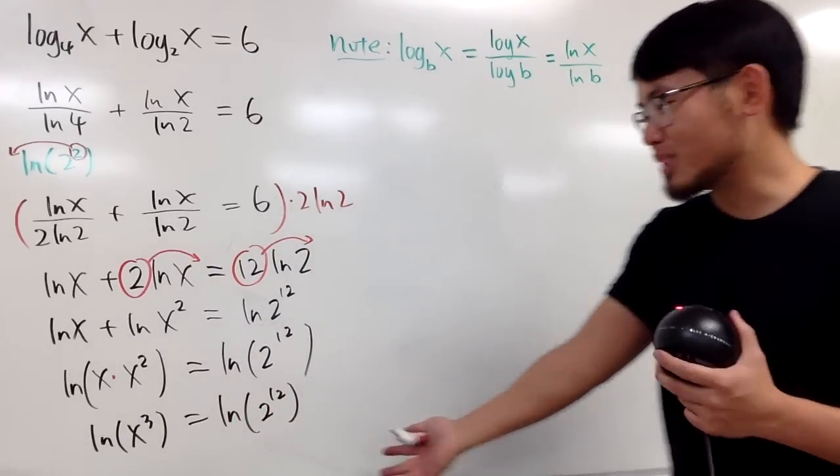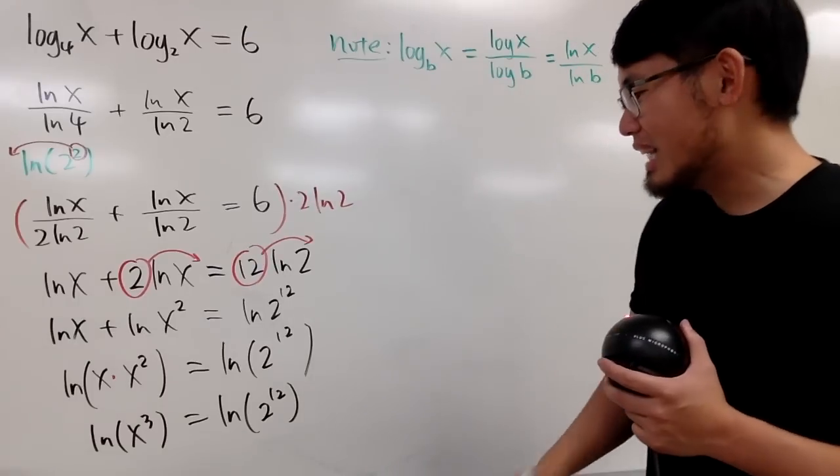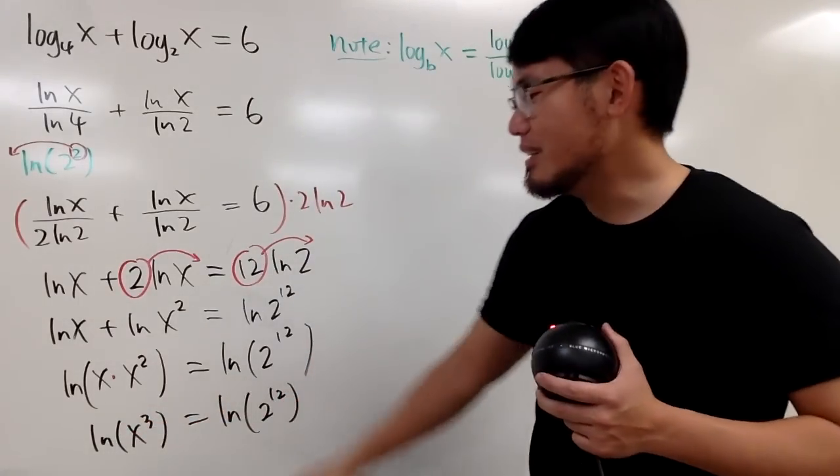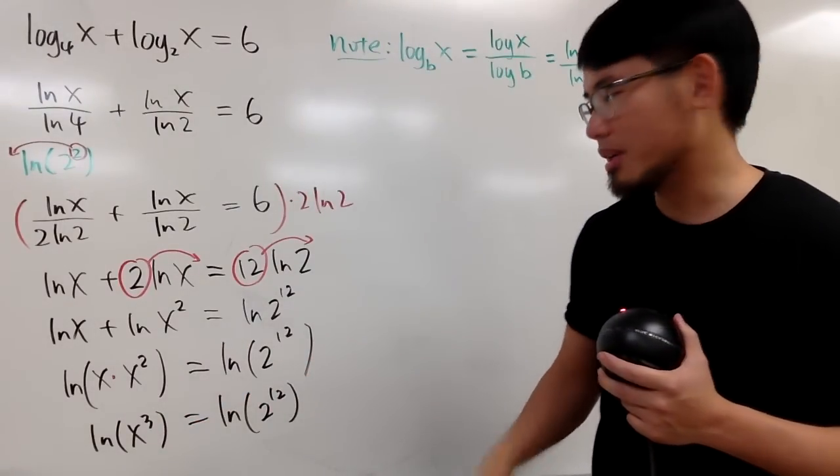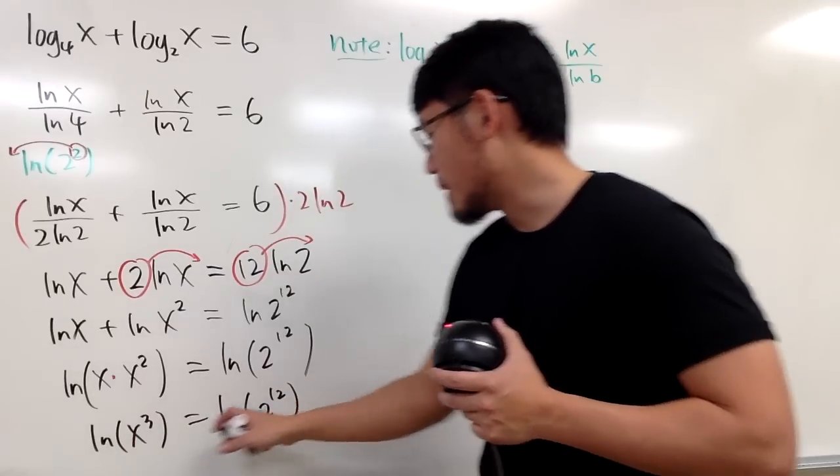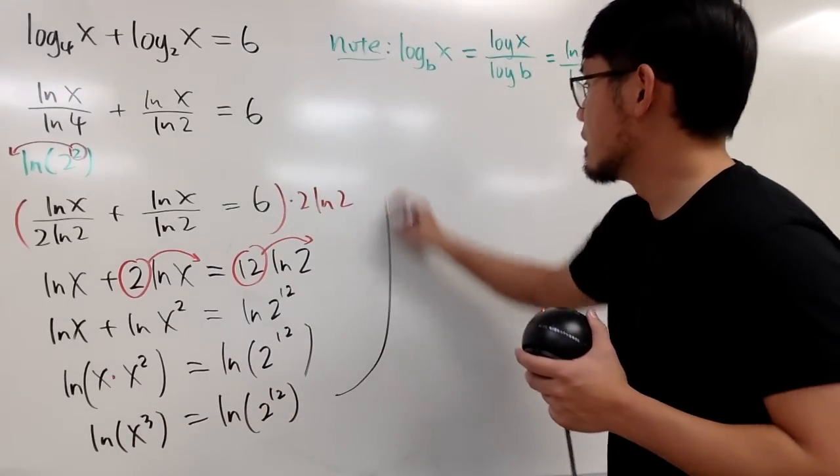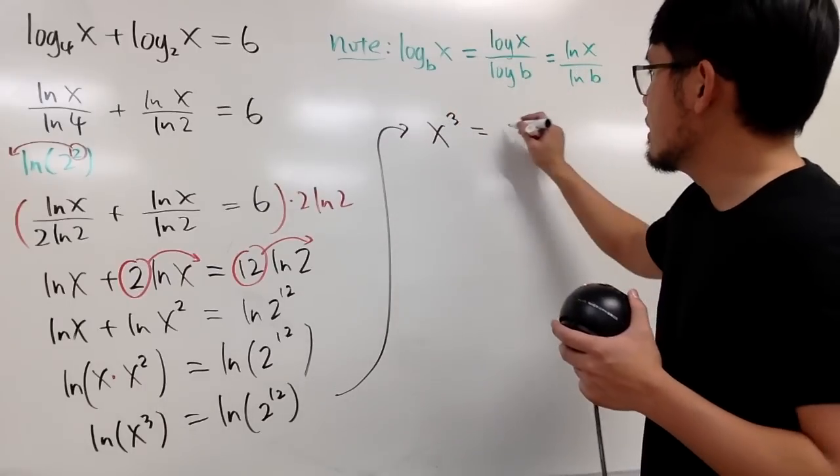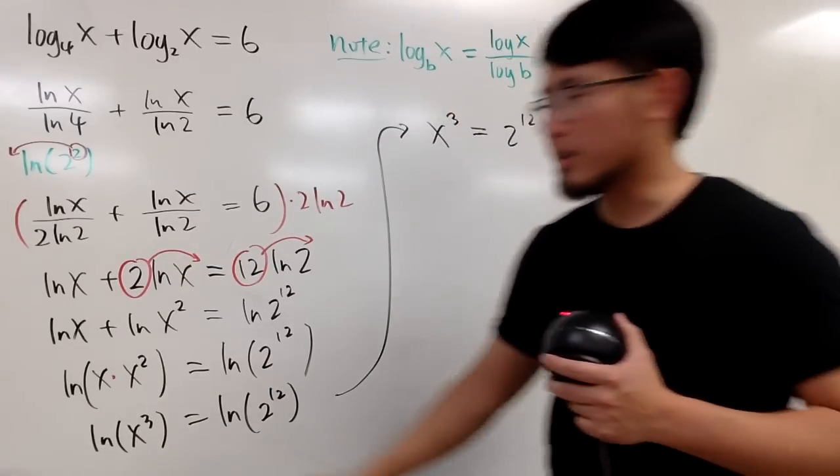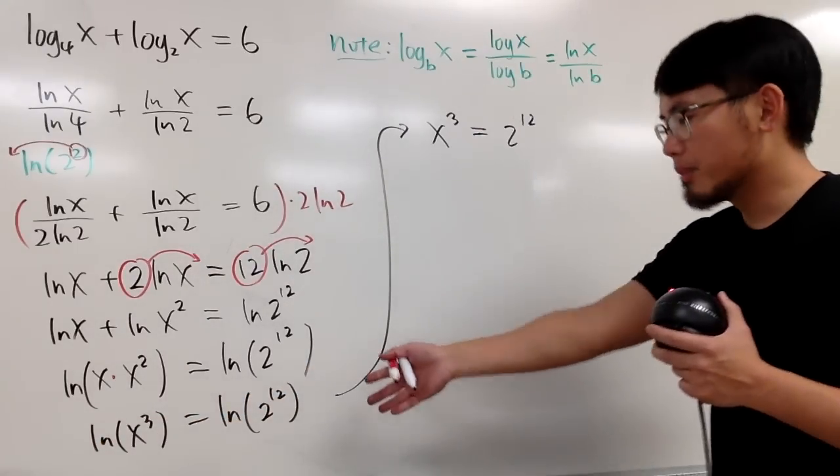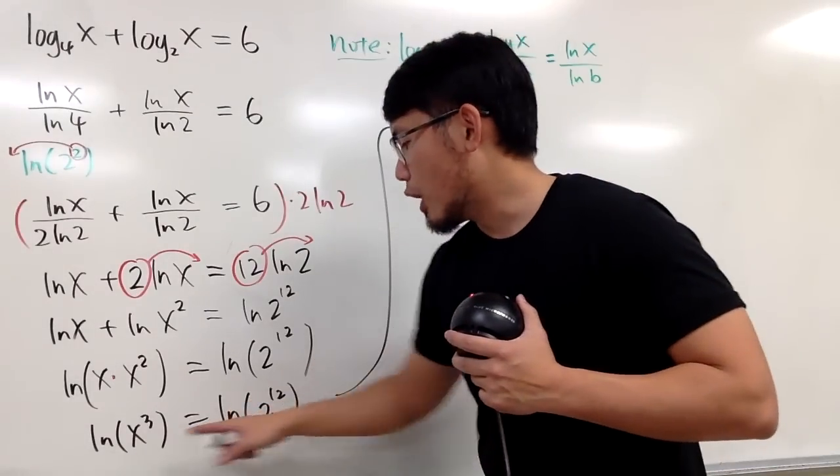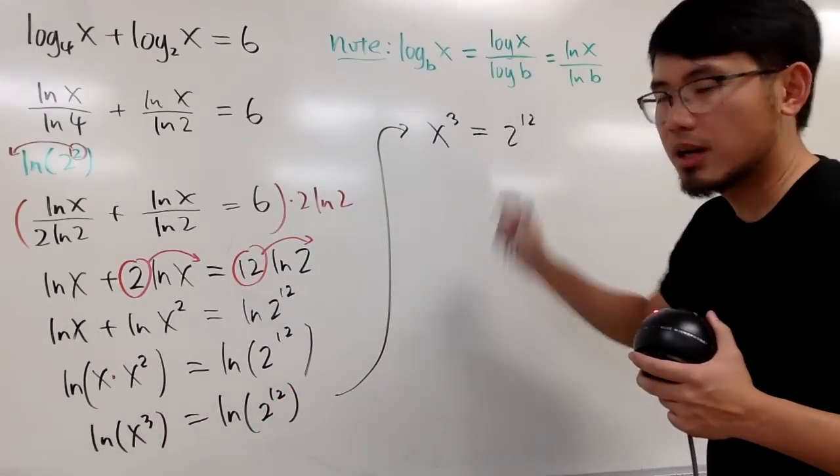So, this is pretty much a simplification that we have done so far. And now, check this out. In the real world, when you have natural log equal to each other, that means the input have to equal to each other as well, because natural log is a one-to-one function. Therefore, we have x to the 3rd power has to be the same as 2 to the 12th power. And another way to look at this is you can do e to this power, e to that power, but I think that explanation was better. Natural log is a one-to-one function, meaning that if the output are the same, that means the input have to be the same.